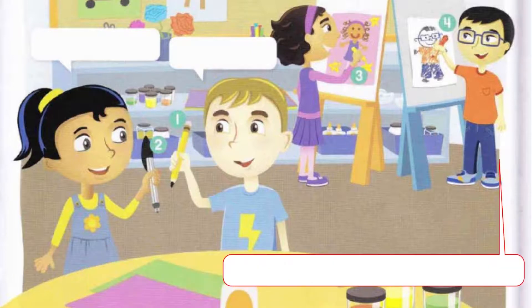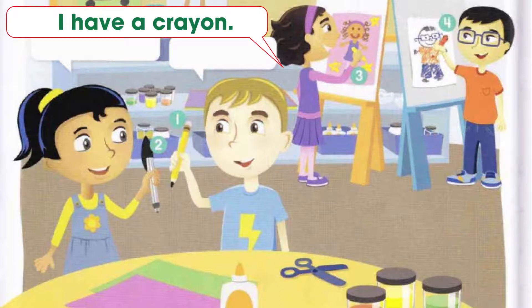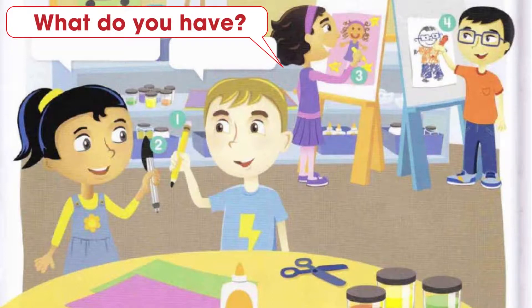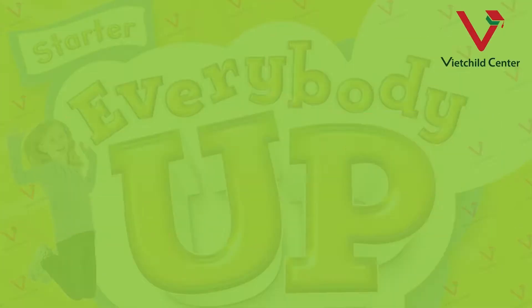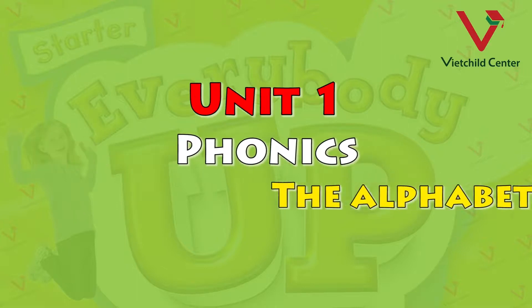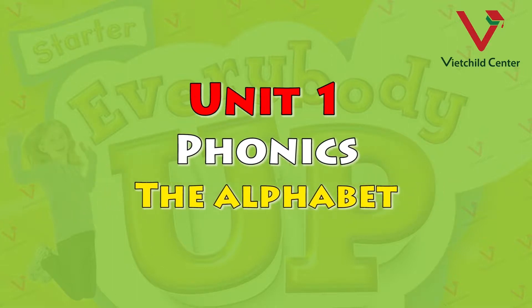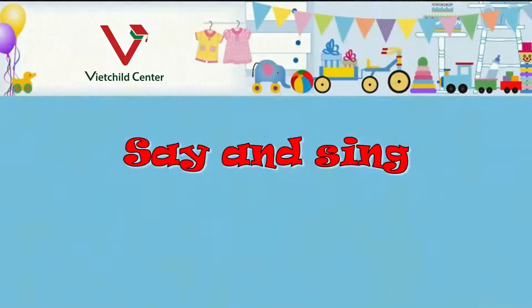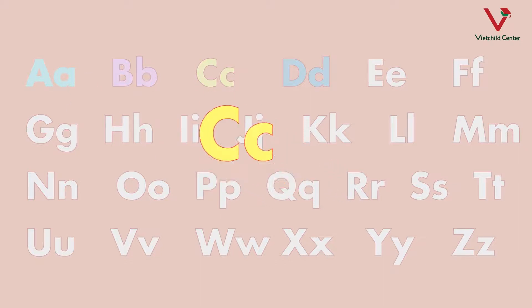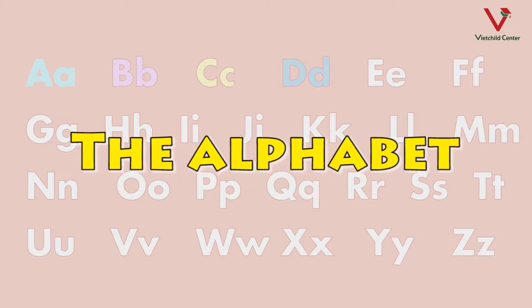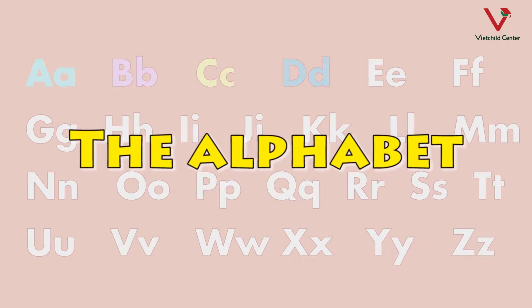3. What do you have? I have a crayon. 4. What do you have? I have a marker.